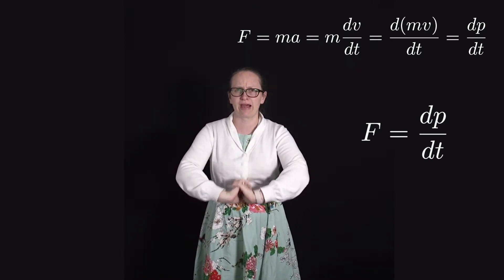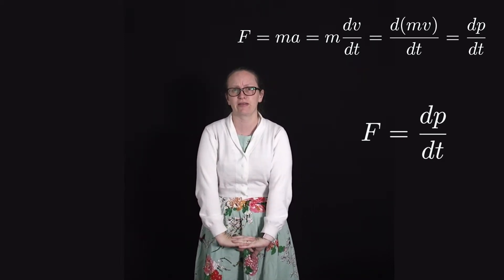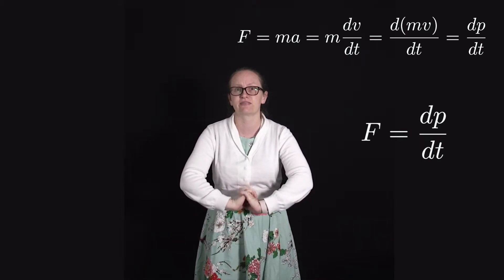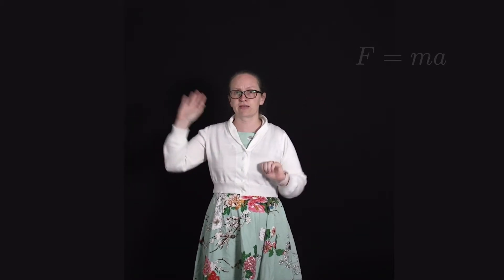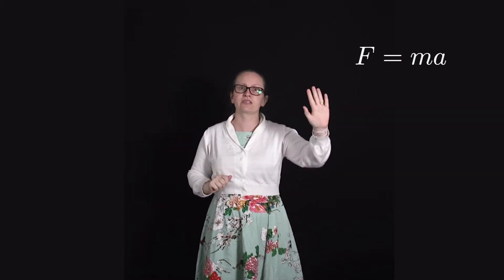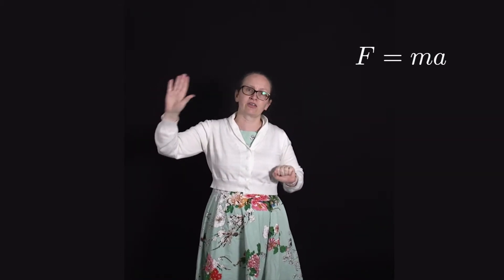So let's consider what would happen if we tried using F equals ma in the relativistic case. Imagine that we applied a constant force to an object over a very long period of time. Well in that case F is equal to ma. So with a constant force we're going to get a constant acceleration.